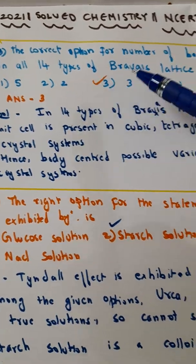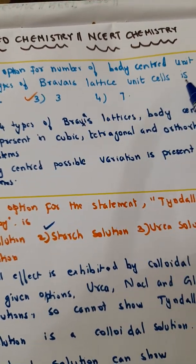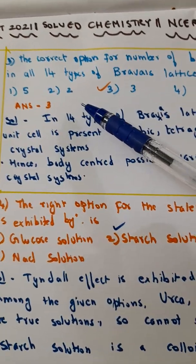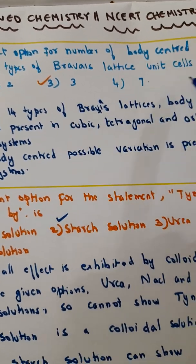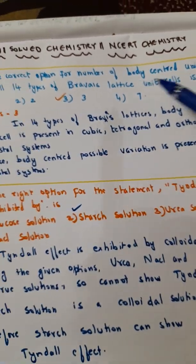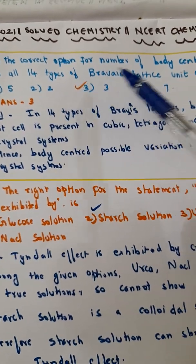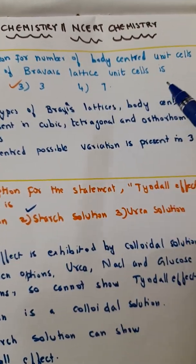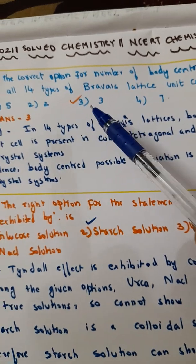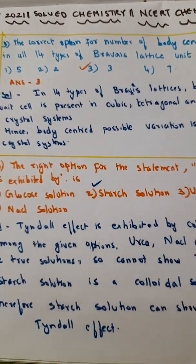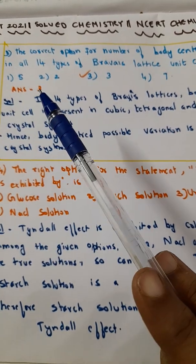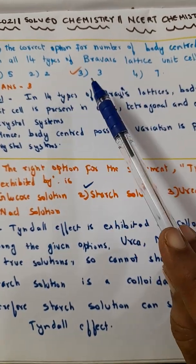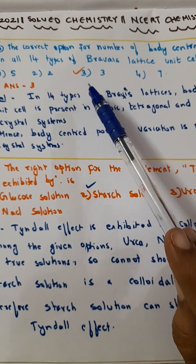That is the correct option 4. The number of body centered unit cells in all 14 types of Bravais lattice unit cells is what? The correct option for the number of body centered unit cells in all 14 types of Bravais lattice unit cells. Options given are 5, 2, 3, and 7.